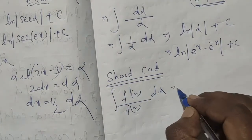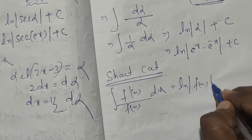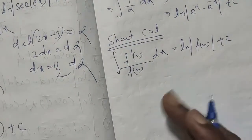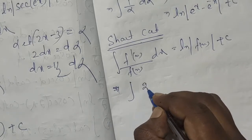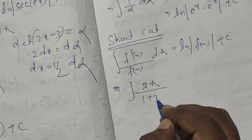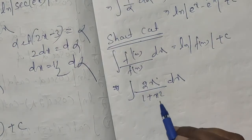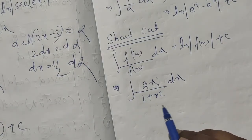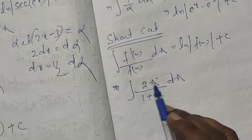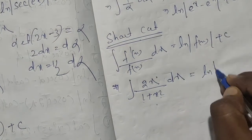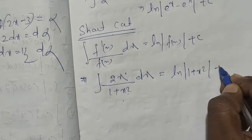For example, the integral of 2x by 1 plus x squared dx: the function is of the p by q form, and the derivative of 1 plus x squared is 2x, so the direct answer is ln of 1 plus x squared plus c.